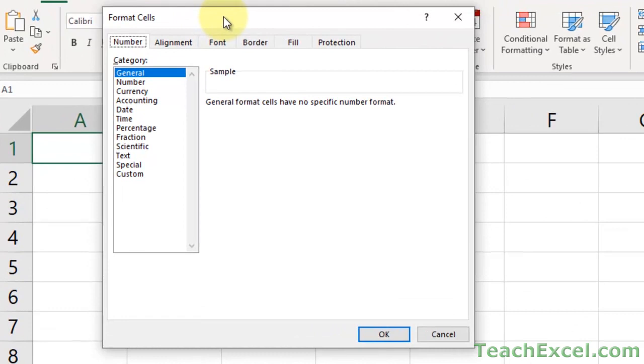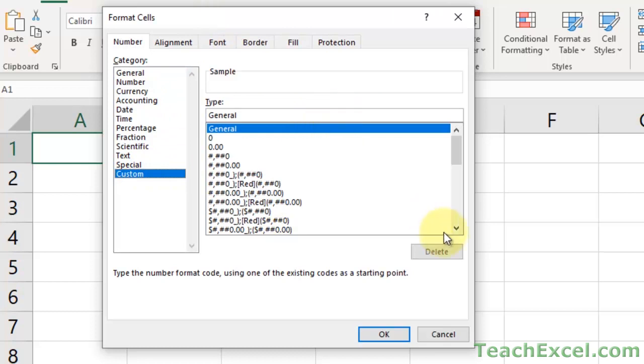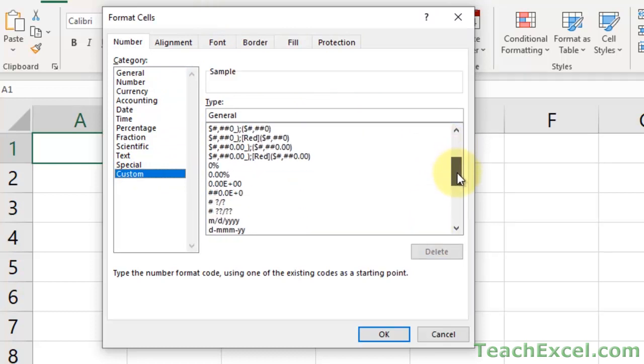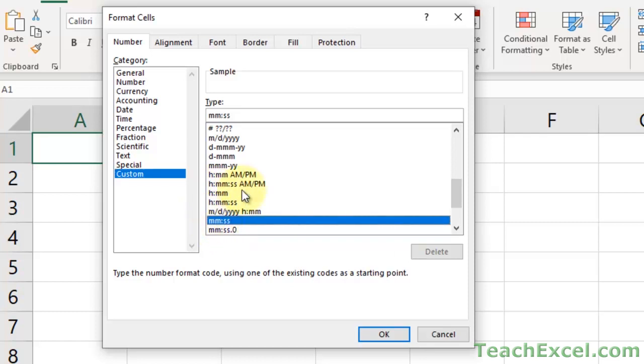So you can have it appear however you want. We're going to go down to Custom. And then over here we have a lot of options. Go down right here. So you could have it do hours, minutes, and seconds. Hours and minutes. We're going to do minutes and seconds.